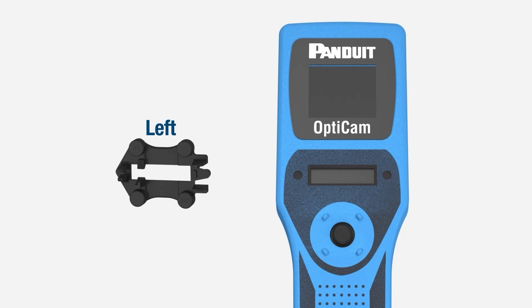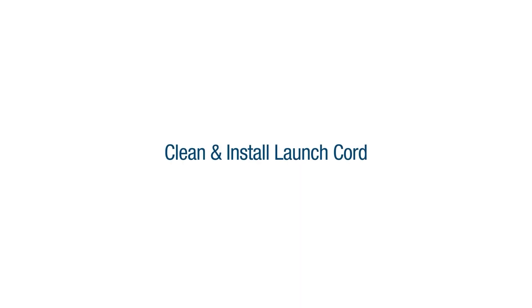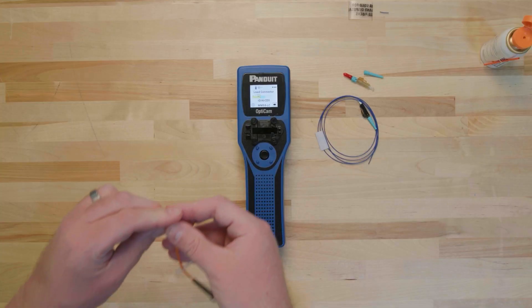Note, if you are doing a left-handed termination, be sure to change your settings on the tool to the left. Once the tool is clean and the settings are correct, it is time to clean and install the launch cord.